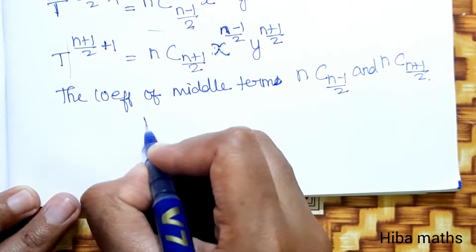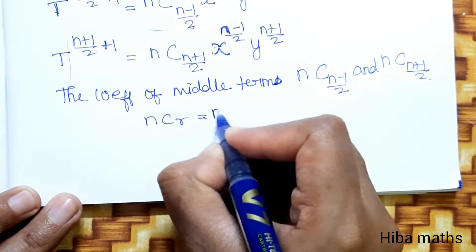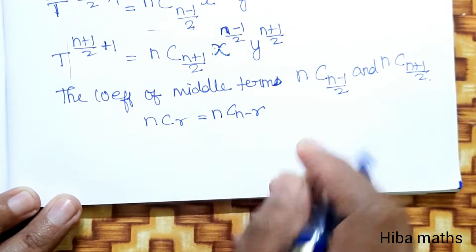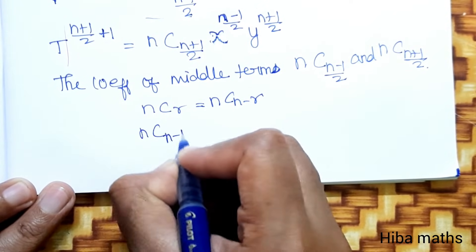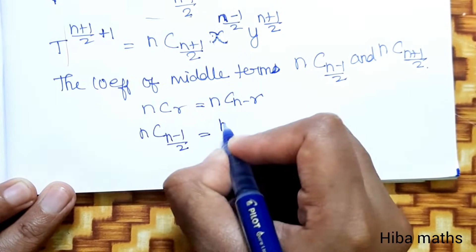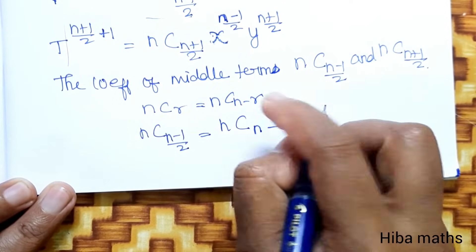We use the property: nCr = nC(n-r). Now we can substitute. So nC((n-1)/2) is equal to nC(n-r), where r = (n-1)/2.